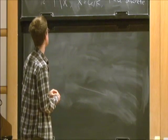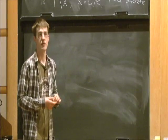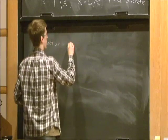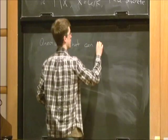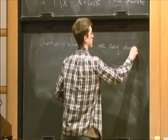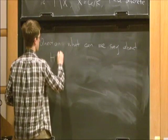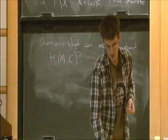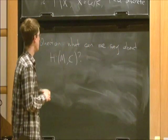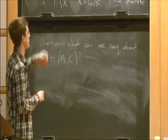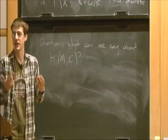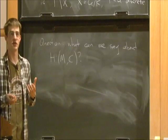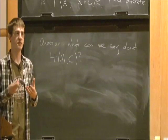A natural question that you can ask is, assume that M has finite volume or even that it's compact. What can we say about the cohomology groups of M with complex coefficients? There are examples where we understand these things very well. In the case of hyperbolic two space and compact M, this is just a Riemann surface, and we understand the cohomology of these perfectly. On the other hand, if we make this just a little bit more complicated and go to a hyperbolic three manifold, then suddenly things are far less well understood.